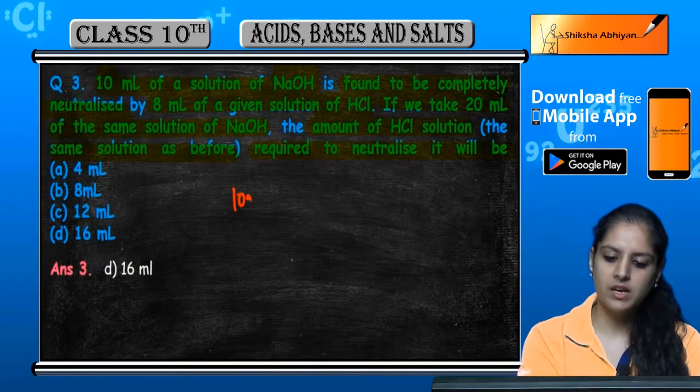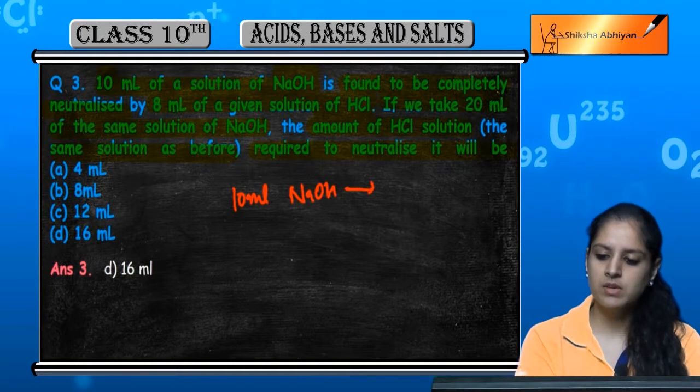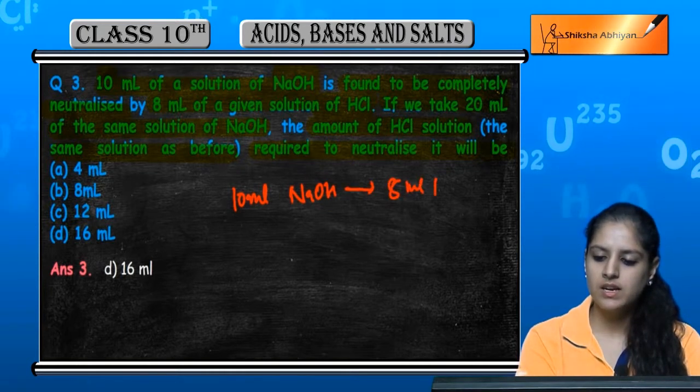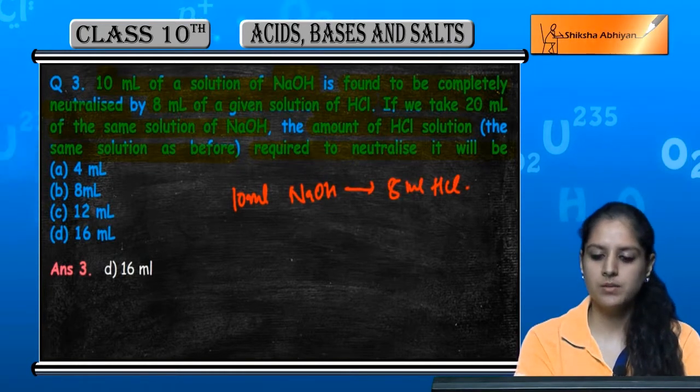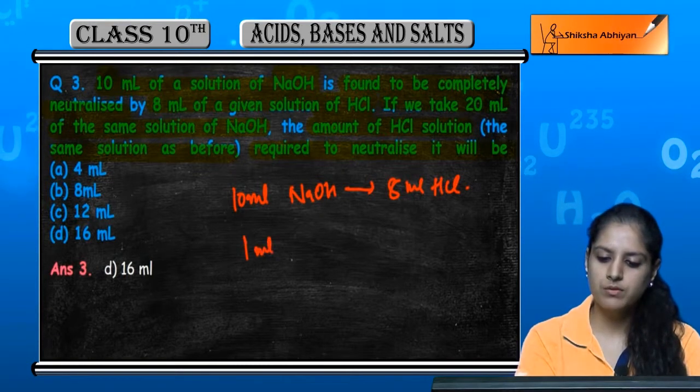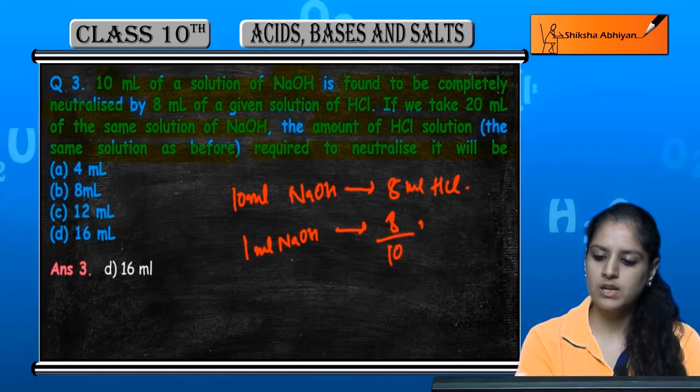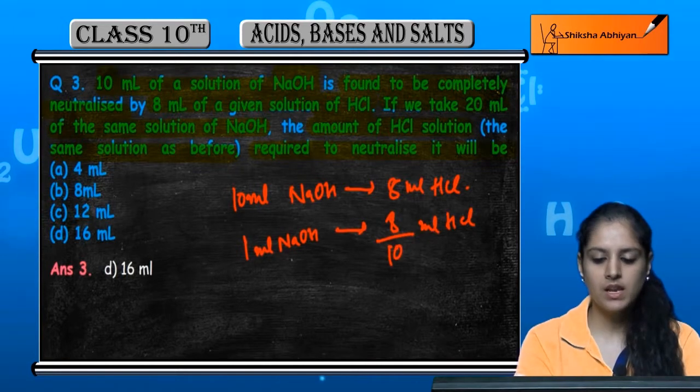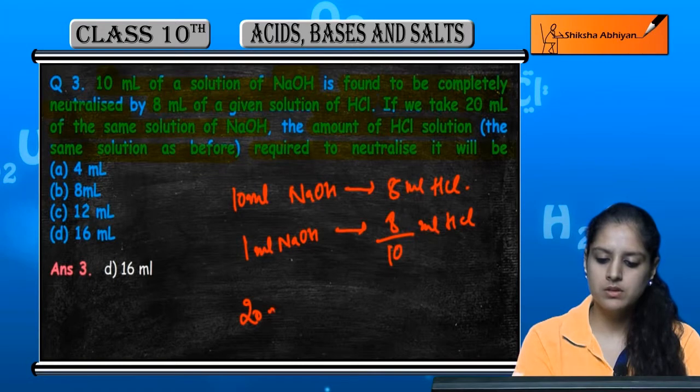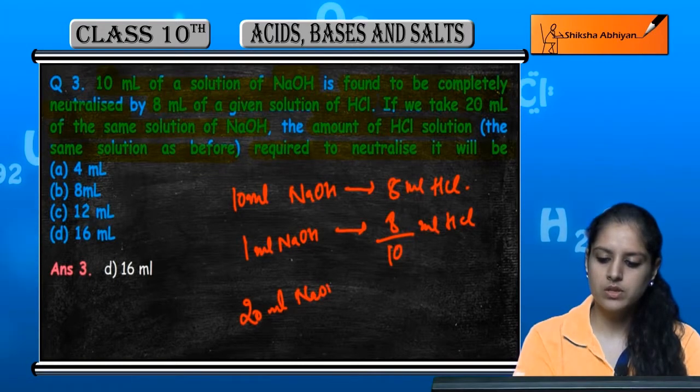If we gave 10 ml NaOH to neutralize it, so if we first gave 8 upon 10 ml of HCl, now we have been given 20 ml of NaOH.